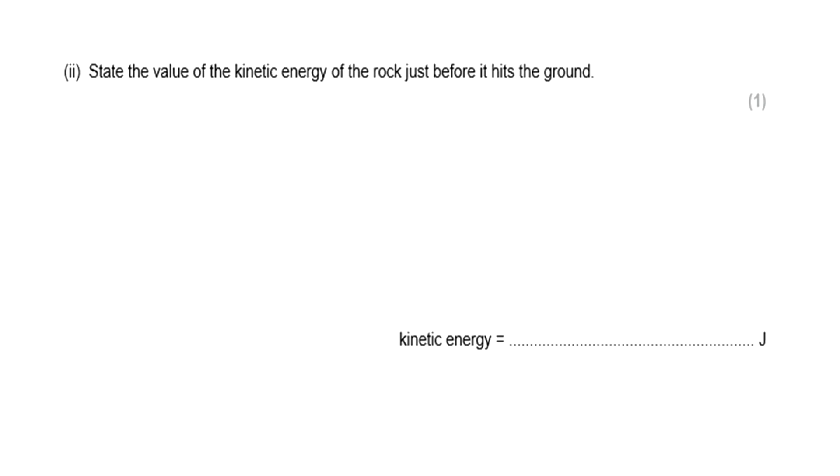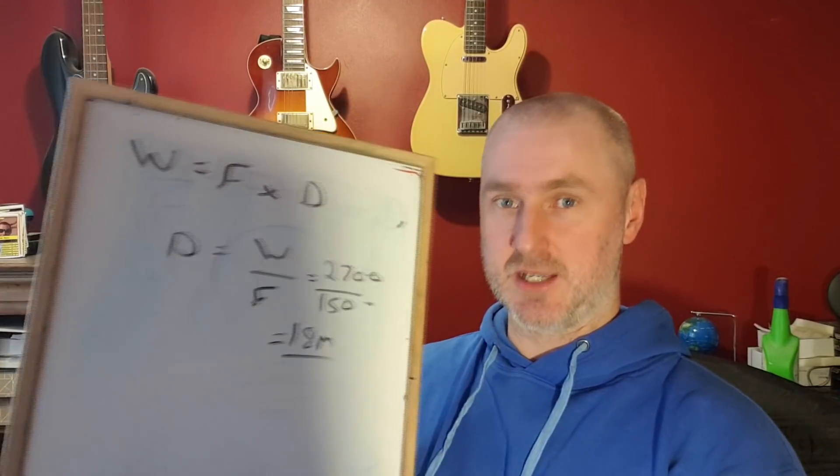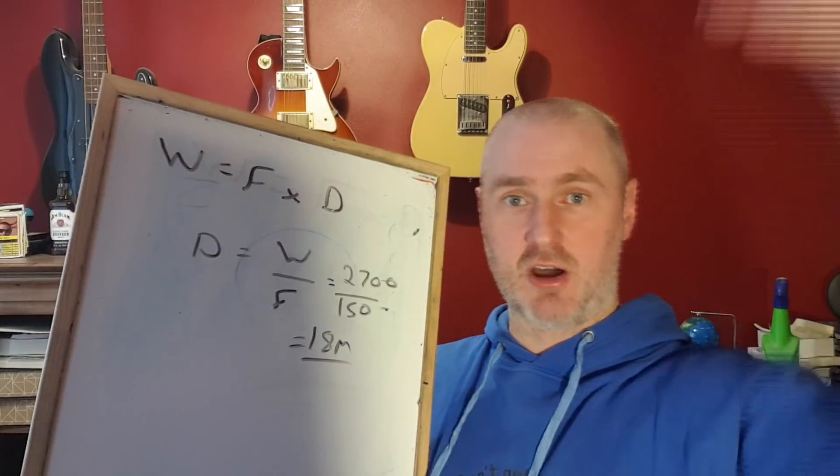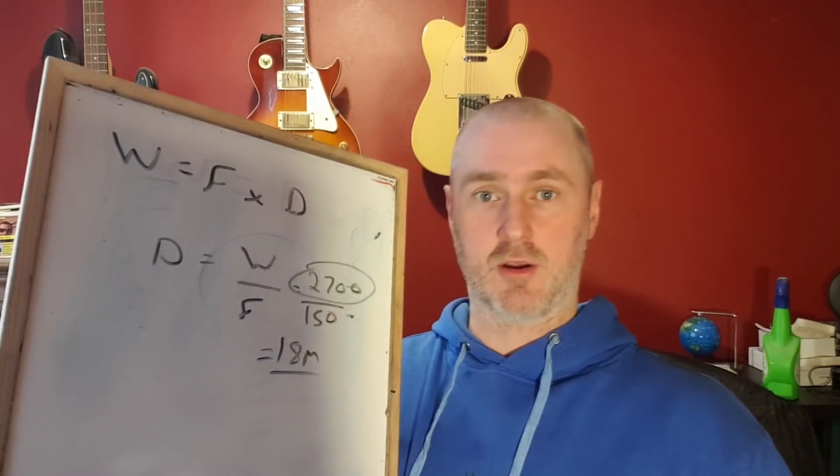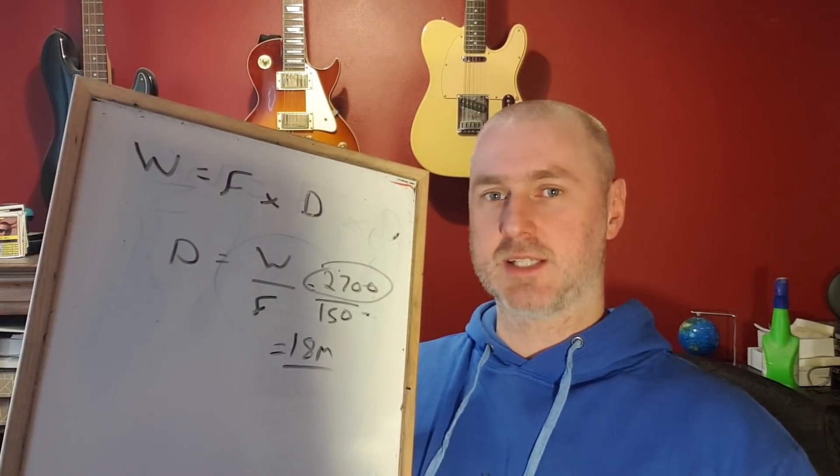The second part of the question is asking us how much kinetic energy the rock will have just before it hits the ground. You may need some of the information from part one. Pause it now unless you want the answer. This question was only worth one mark because it's quite straightforward. We said that work done was an energy transfer, and gravitational potential energy is being transferred to kinetic energy. So if I want to know how much kinetic energy the rock has before it hits the ground, all I need to know is how much gravitational it had to start with. We're told that 2,700 joules of work are done on that rock. So 2,700 joules have turned from gravitational to kinetic. That is simply our answer. No complex calculation required.